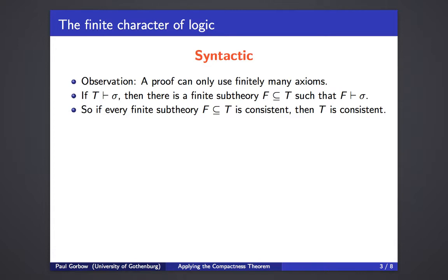A very important application of this is that if every finite sub-theory is consistent, then the whole theory is consistent. To see this: to be consistent means that there is no proof of a contradiction. So if there were a proof of a contradiction from T, then there must be a finite sub-theory where there is also a proof of a contradiction.